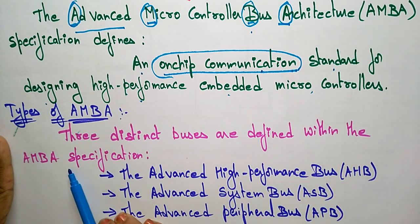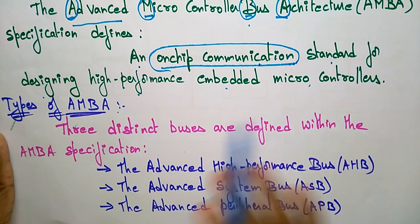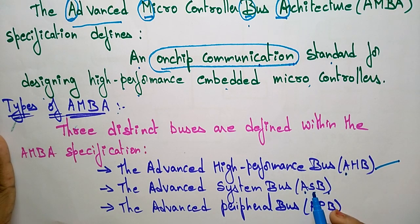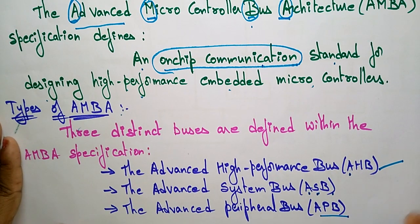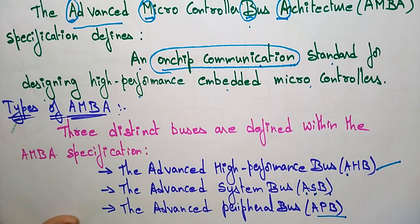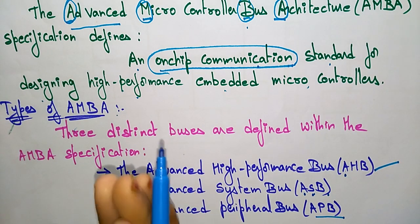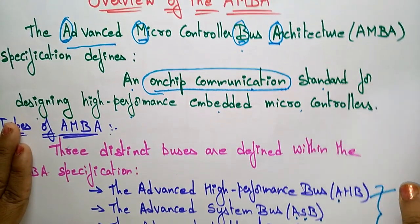There are different types of Advanced Microcontroller Bus Architectures. Three distinct buses are defined within the AMBA specification. Those three are: AHB — Advanced High-performance Bus, ASB — Advanced System Bus, and APB — Advanced Peripheral Bus. These three distinct buses are present in the Advanced Microcontroller Bus Architecture.